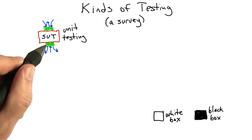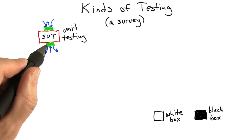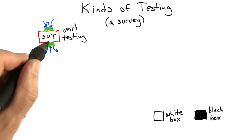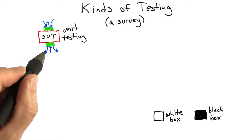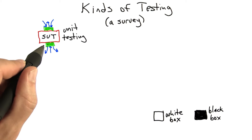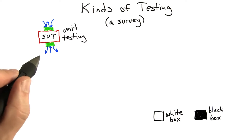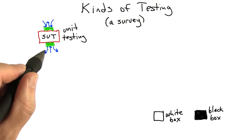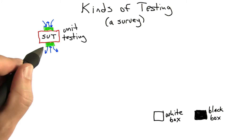Unit testing is something that we're going to spend a lot of time in this course looking at. Unit testing means looking at some small software module at a time and testing it in an isolated fashion. This is what we're doing with the bounded buffer example from the last unit and with the square root function that we were talking about earlier in this unit. The main thing that distinguishes unit testing from other kinds of testing is that we're testing a smaller amount of software.